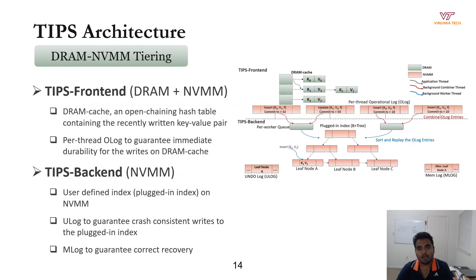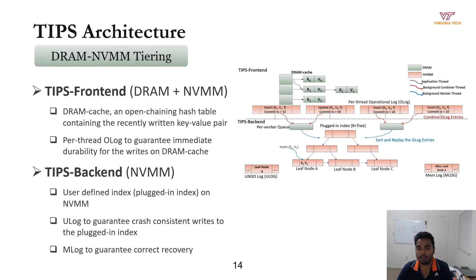The figure on the right shows the overall architecture of the TIPS framework. The TIPS front-end consists of a DRAM cache which contains the recently written key-value pairs and also contains a per-thread operation log to guarantee crash consistency for writes that happen on the DRAM cache. The backend consists of a user-defined index which we call the Plugged-in Index — for illustration purposes, we will use a B+ tree as the user-defined index. The backend also has an undo log and a mem log to guarantee crash-consistent updates to the Plugged-in Index.